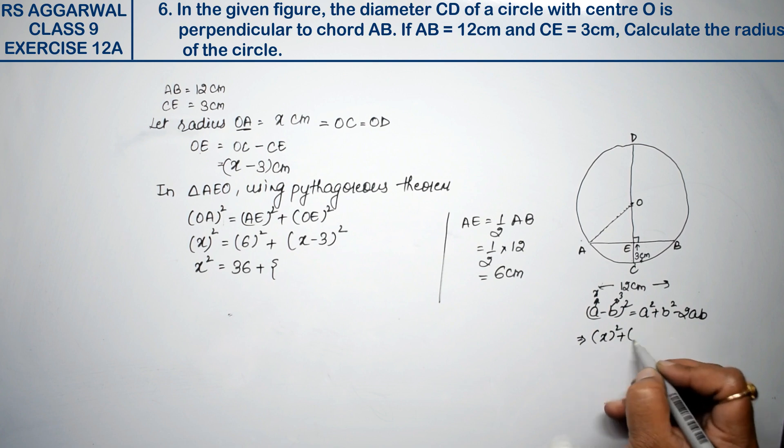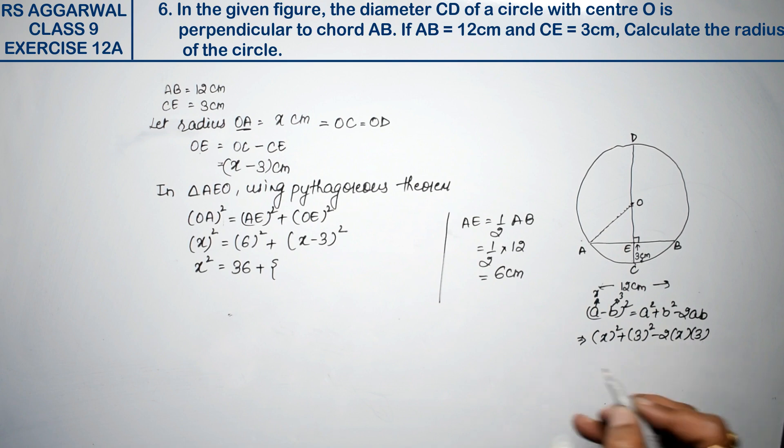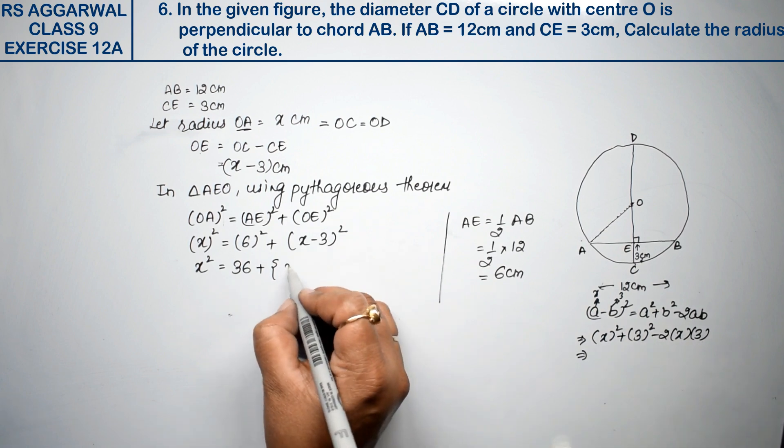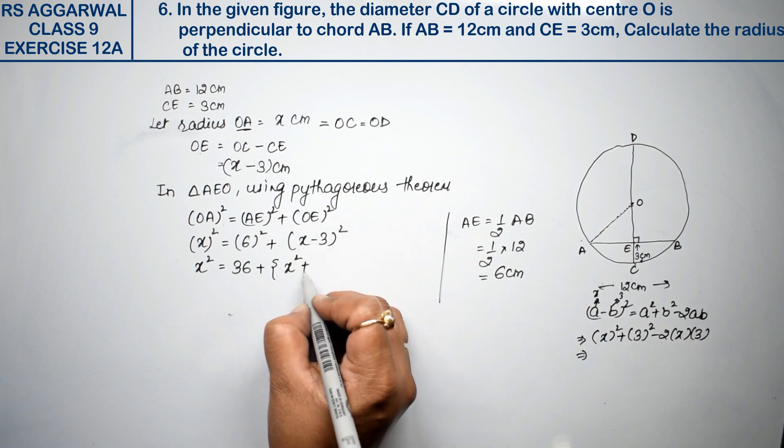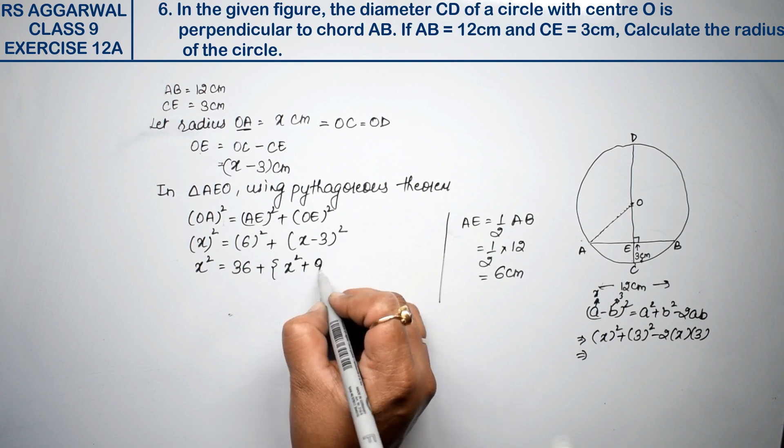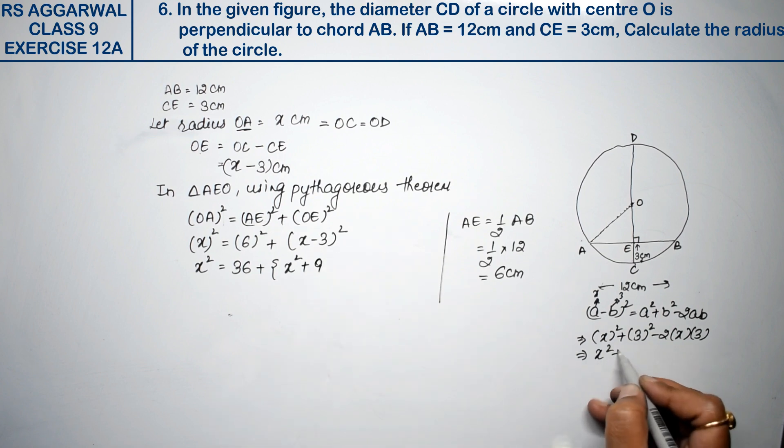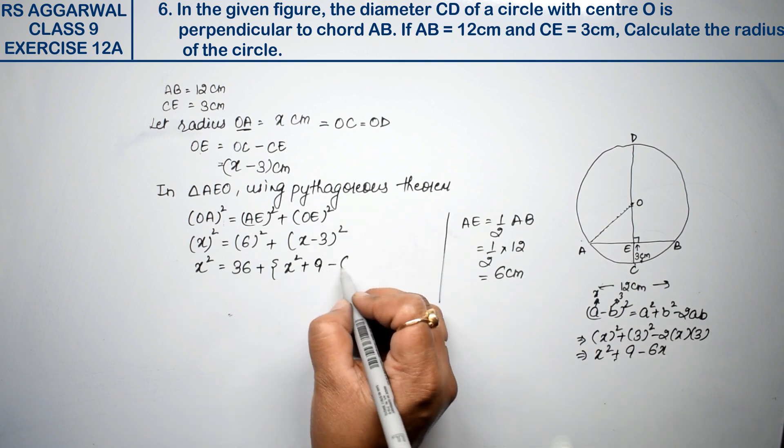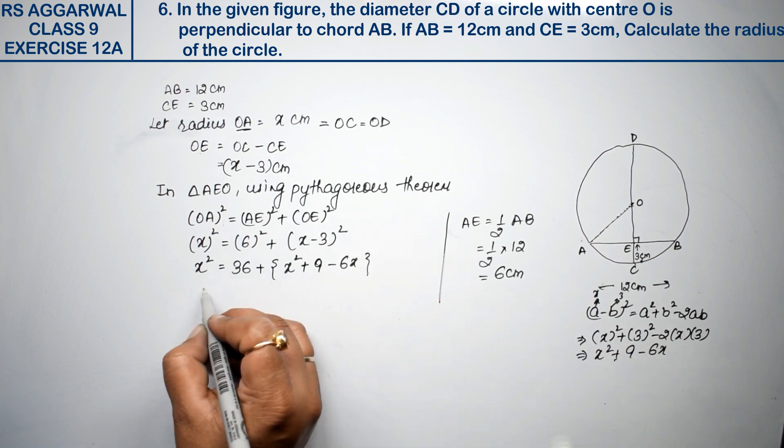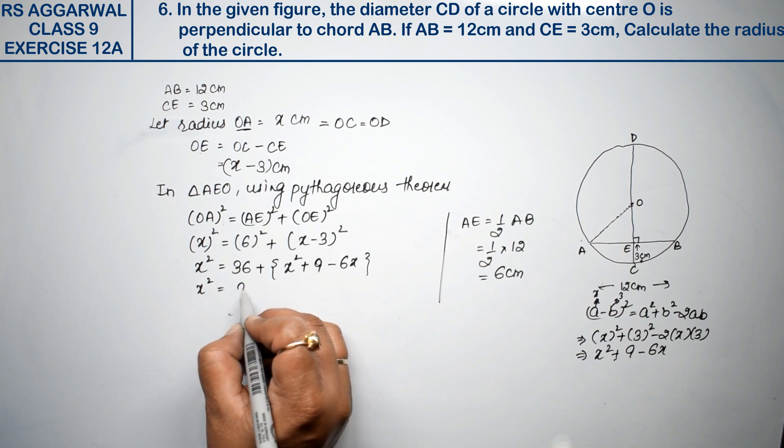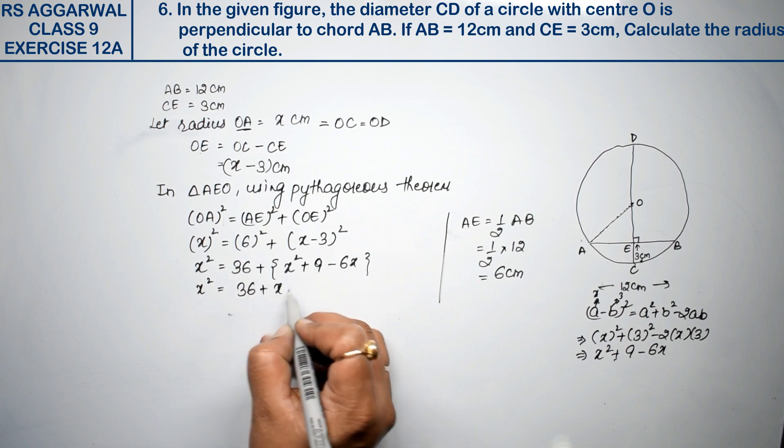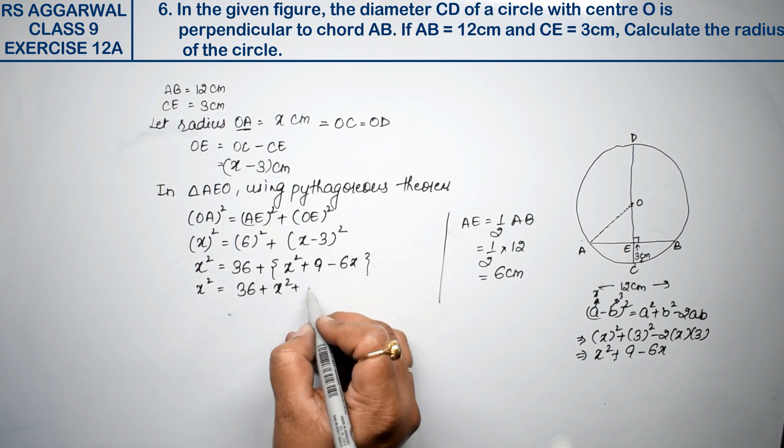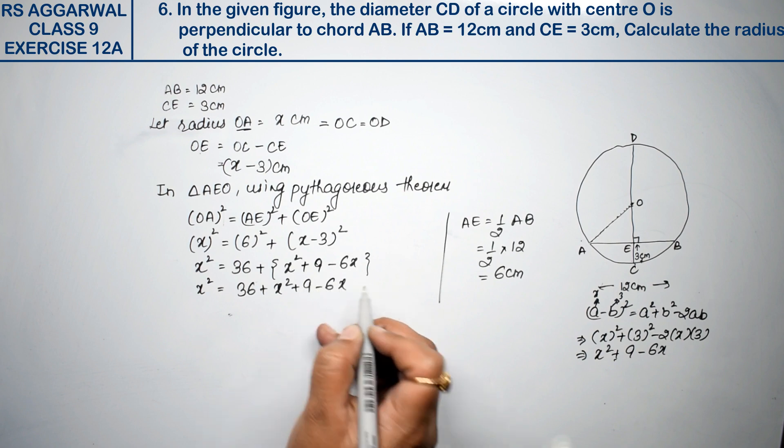Plus in place of b I write 3, minus 2 into x into 3. So this is a square plus b square, 3 square is 9, a square plus 9 minus 6x. Now I'm opening the bracket, equals to 36 plus x square. Inside the bracket, so the signs inside won't change.